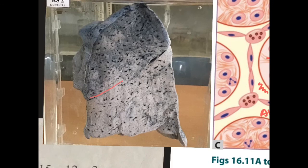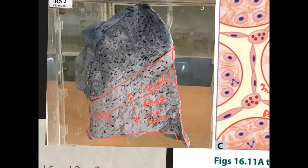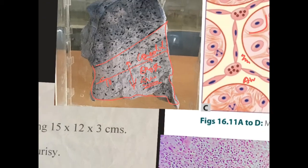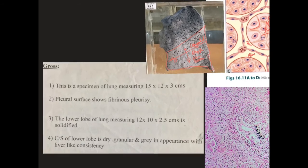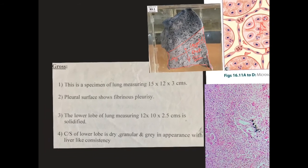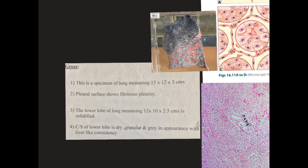Coming to the gray hepatization gross: the color has changed from red to gray. Here you can see that the lower lobe is affected, measuring around 10 × 5 cm and consolidated. The cut surface shows dry, granular, and gray areas. One full lobe is involved — that is why it is lobar pneumonia, most likely representing gray hepatization.